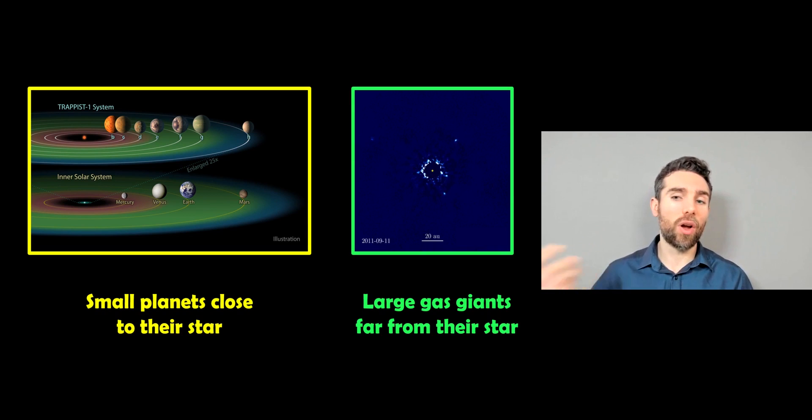you've got very large gas giants a long way from their star. So we've got a whole range of different types of planetary systems, which is going to help us classify them and give them a class.